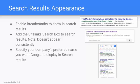The sitelink search box is another example — below the Pinterest example, you can search pinterest.com directly from search results. This one doesn't appear consistently; Google has called out that they only show this when they believe it's appropriate to the user. And finally, you can specify your company's preferred name, which is a feature they call out as enabled by structured data.